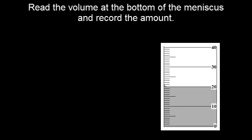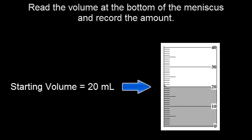Read the volume at the bottom of the curved meniscus and record the amount. We have a starting volume of 20 milliliters.